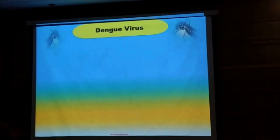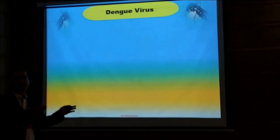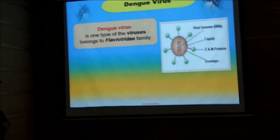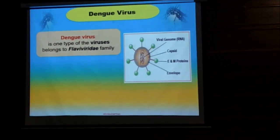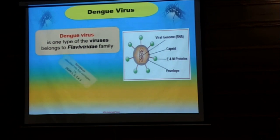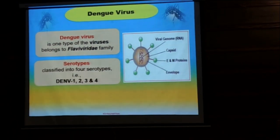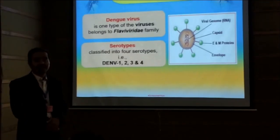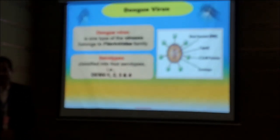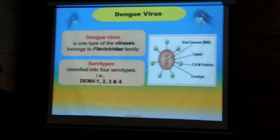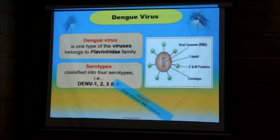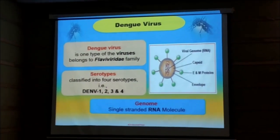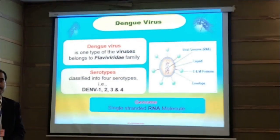Now, the Dengue virus is responsible for these manifestations — Dengue fever and hemorrhagic fever. Dengue virus is one type of virus belonging to the family Flaviviridae, and there are four different serotypes. This is the reason there is a problem developing an effective vaccine, because there are four serotypes of this virus. There is also an envelope, and this structure contains the capsid with some other proteins.